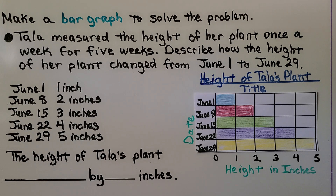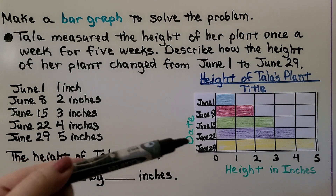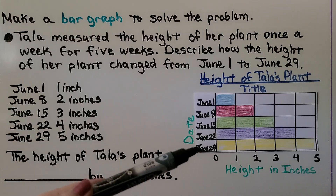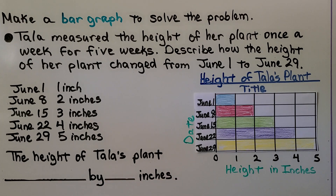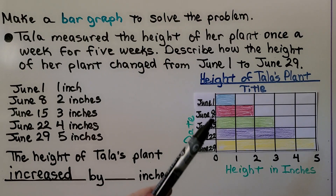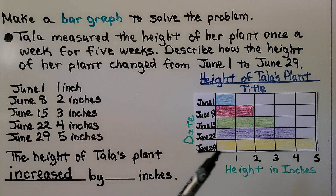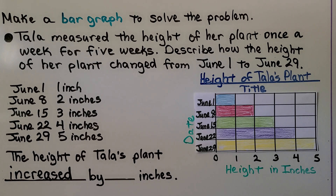Now that the bar chart is complete, we can describe how the height of her plant changed from June 1st to June 29th. This bar chart has the bars going across, and we can see from June 1st to June 29th the length of the bar is increasing — that means the height of Tala's plant increased. By how many inches? June 1st is 1 inch and June 29th is 5 inches. We subtract: 5 minus 1 equals 4. The height of Tala's plant increased by 4 inches from June 1st to June 29th.